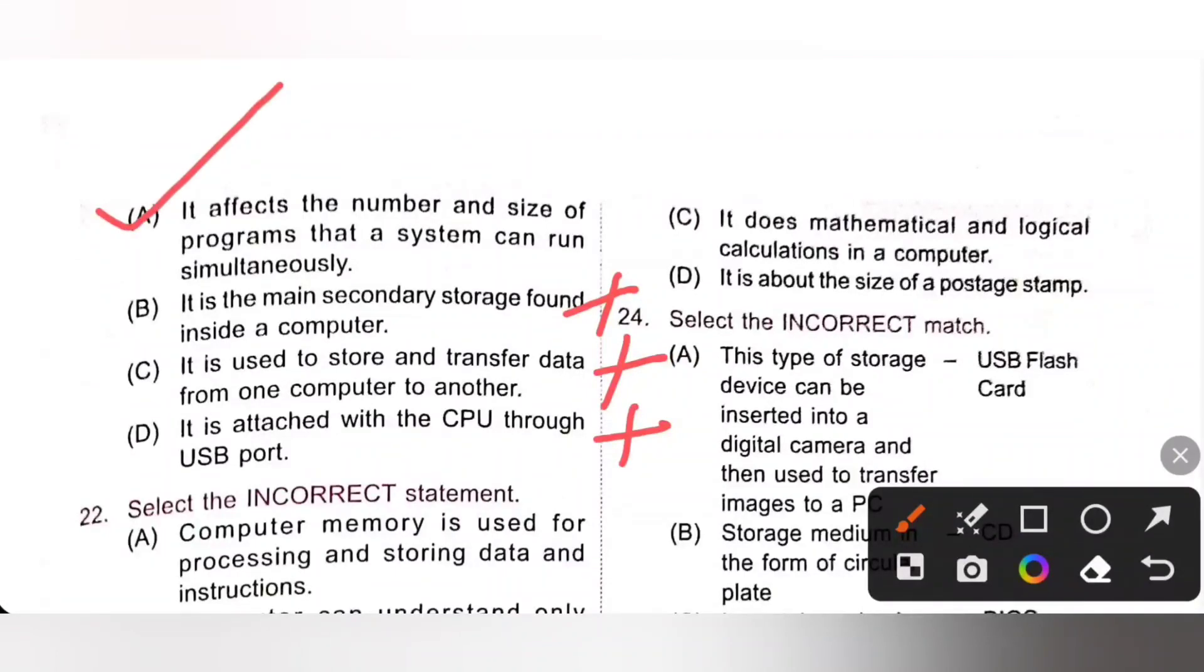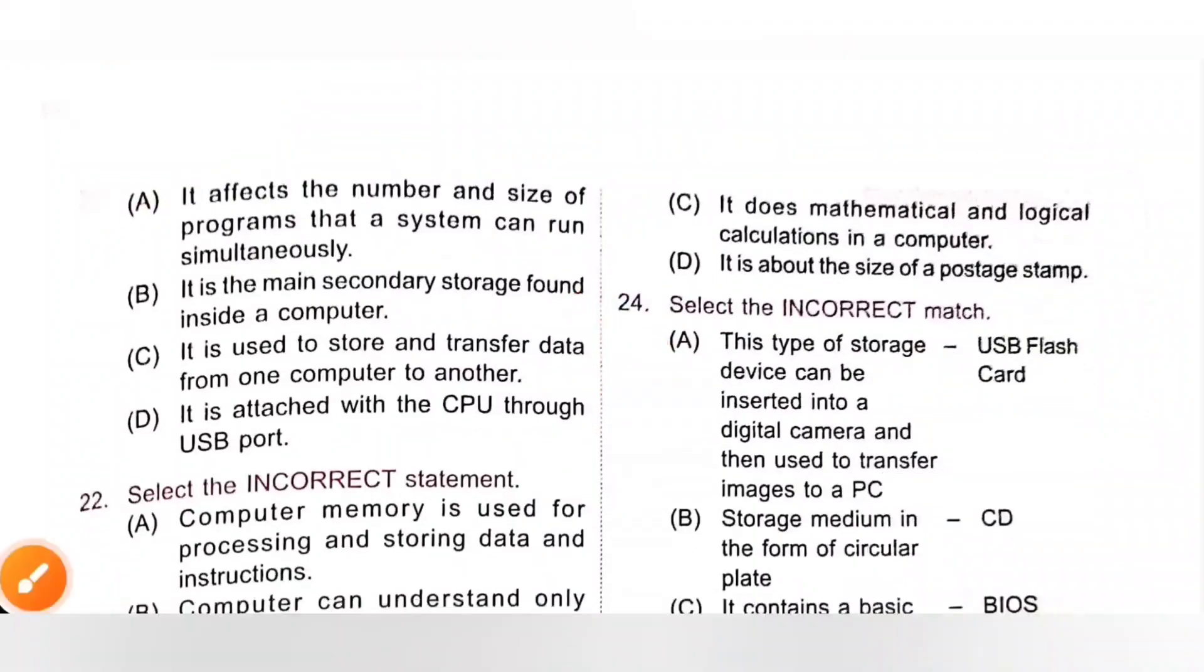So option A is the correct answer. The more RAM your system has, the faster your program will run. It affects the number and size of programs that a system can run simultaneously.